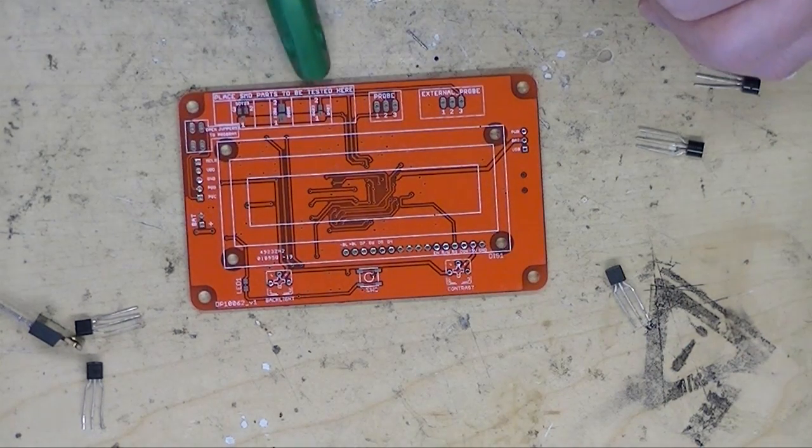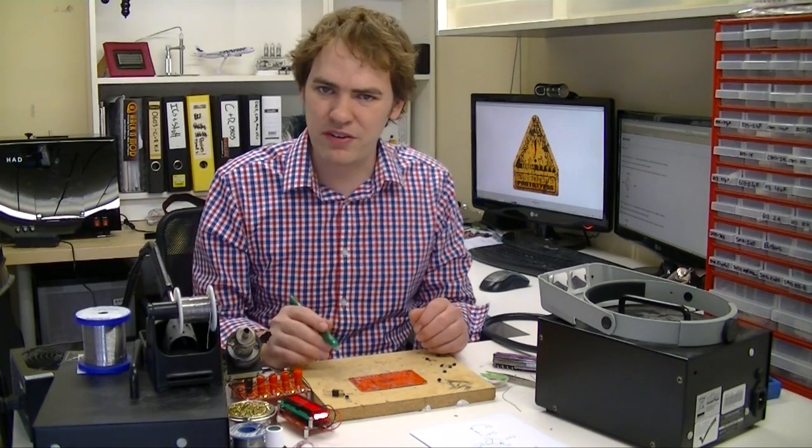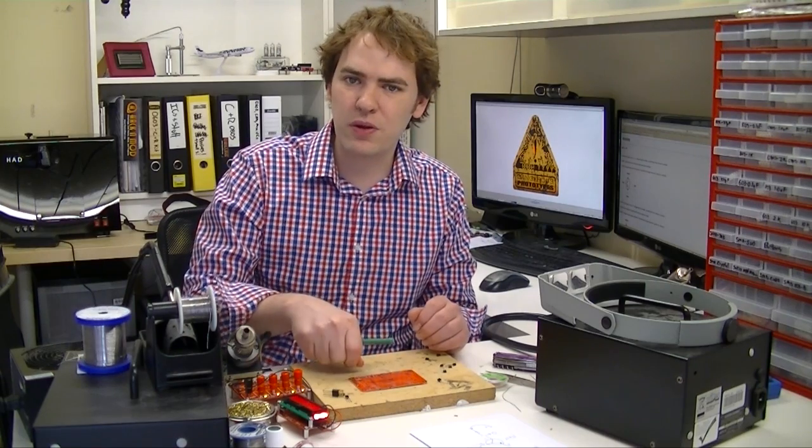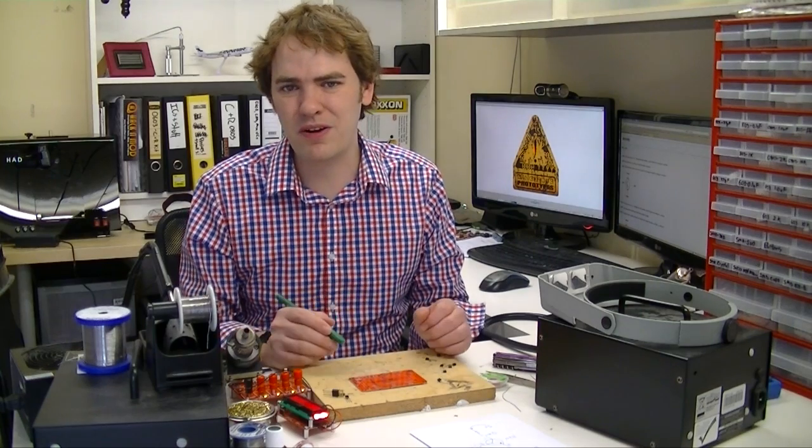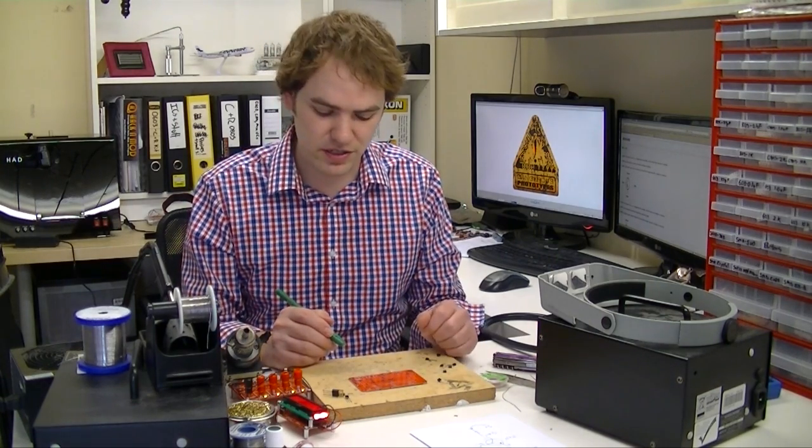Here along the top, we've added footprints for surface mount parts. That way when you're debugging, repairing, or reverse engineering some sort of surface mount device, you can use tweezers to hold your parts onto these spaces and find out what they are too. That'll be a big help because there's hardly ever markings on small surface mount parts, especially the smallest ones.